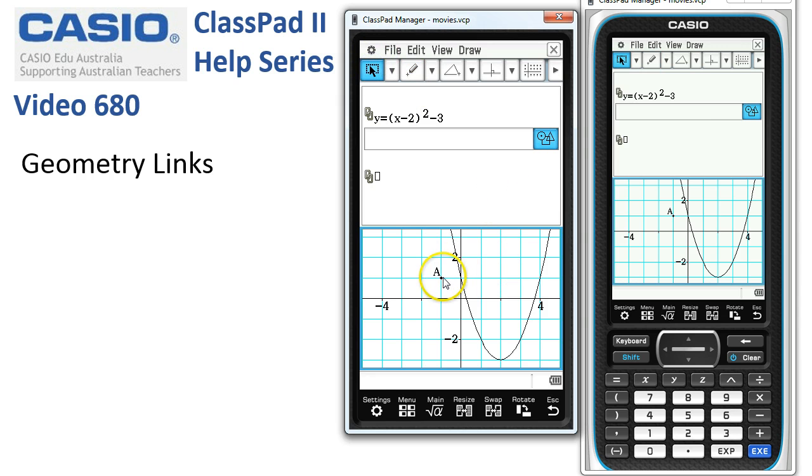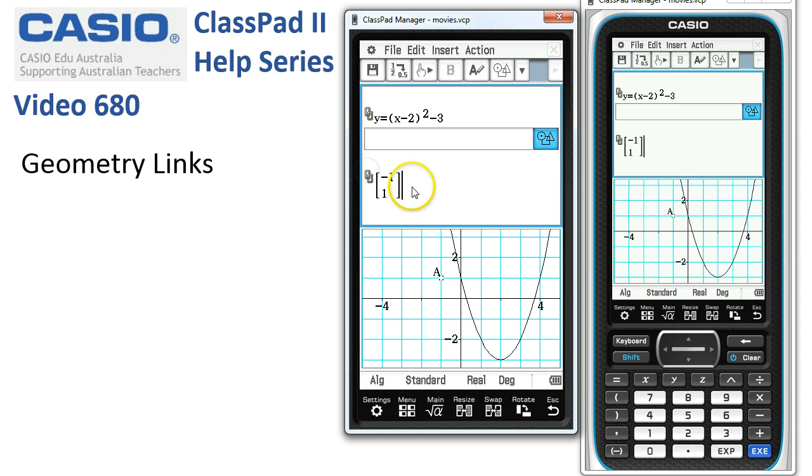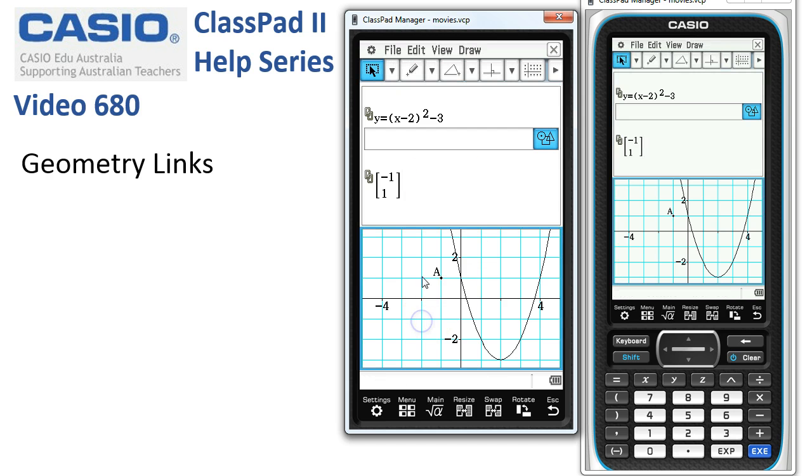Now, if I get the select tool and tap onto A and drag A up into this window, you'll see it's given me the coordinates of a point. Let's add another one down in here. And of course, if I move A around, then that works. So just about every object that we can draw in geometry, we can link to a geometry link.